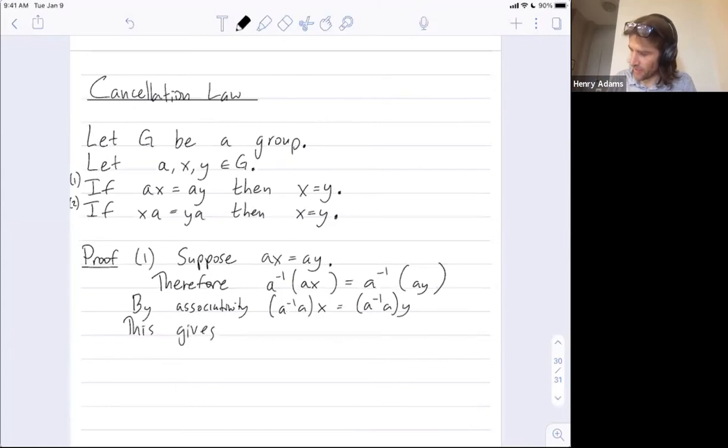What does this give? This gives that the identity times x is equal to the identity times y, just because a inverse times a is always equal to the identity. And maybe I can even put this all on one line. The identity times x is just x and the identity times y is just y. All right. I think it's good to conclude in your proofs. So write down the very, very last step at the end of your proof.